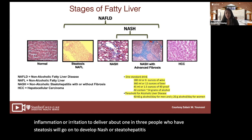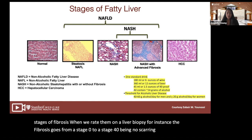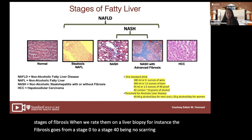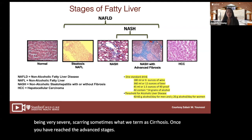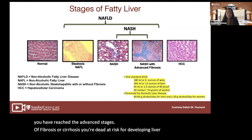When you have long-standing NASH or inflammation in the liver, you will start to develop scarring, which we call fibrosis. Fibrosis is rated on a liver biopsy from stage zero to stage four — zero being no scarring, four being very severe scarring, sometimes termed cirrhosis. Once you reach advanced stages of fibrosis or cirrhosis, you're at risk for developing liver failure, needing a liver transplant, or developing hepatocellular carcinoma, also known as liver cancer.